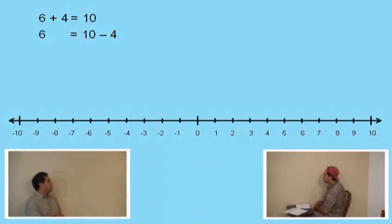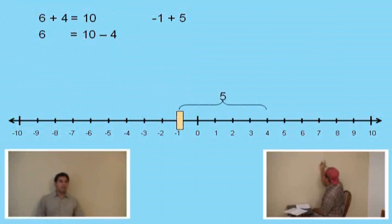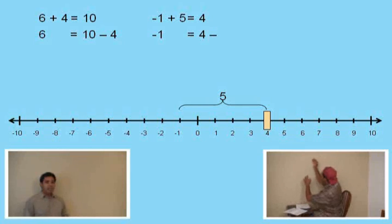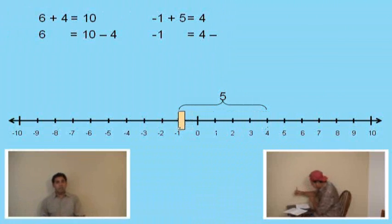So let's go to this next addition problem, negative 1 plus 5. Okay, Charlie, what's negative 1 plus 5? 4. It is 4. Correct. Now, Charlie, what number do you subtract from 4 to get negative 1? 5. Look at your number line there. Yes, it is 5.